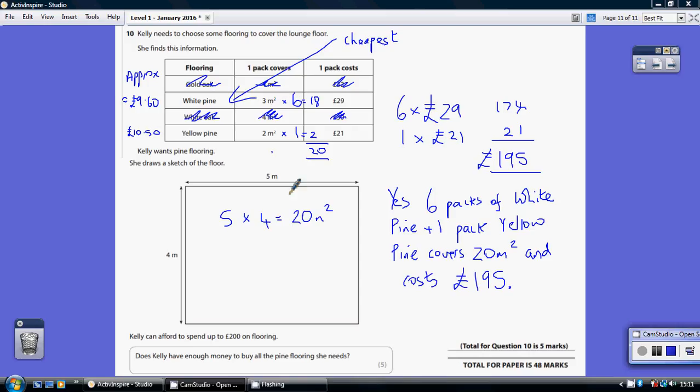So it's three metres squared. We've got to cover 20 metres squared. If I buy six packs of this, that covers 18 metres squared because three sixes are 18. So how much would six packs of this cost me?